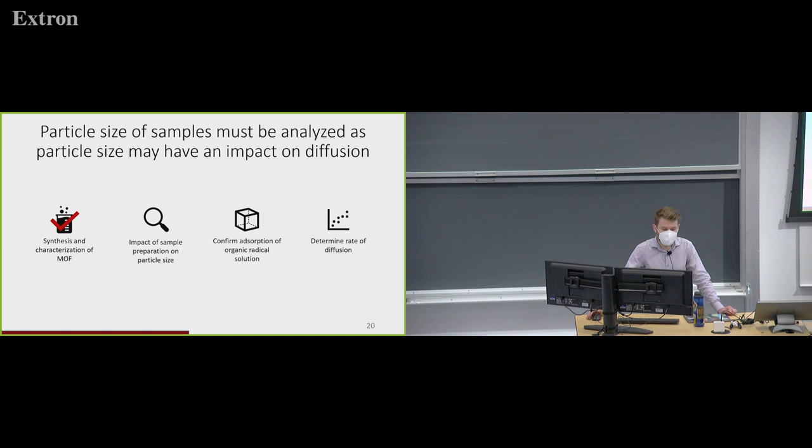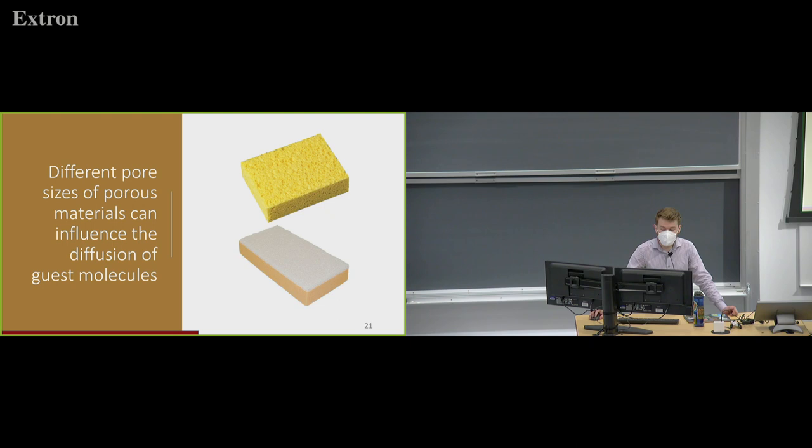So we've completed our first goal of synthesizing and characterizing a metal-organic framework sample. And now it was time to look at how our preparations of the sample would impact particle size. And again, this was largely because the particle size may have some influence on the pore size. And that's going to impact how much diffusion of guest molecules our samples are able to accomplish. So consider for a second these two different kinds of sponges, the top one being more like a cleaning sponge has larger pores than the bottom one, which happens to be a drywall sponge. And because of the difference in the size of the pores, you can imagine these sponges holding significantly different amounts of water. Similarly, in our MOF samples, based on the size of the pores, larger pores are going to cause more diffusion, smaller pores are going to cause less diffusion.